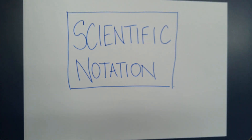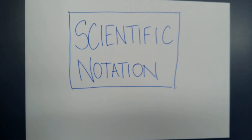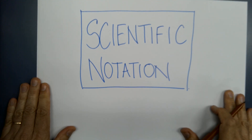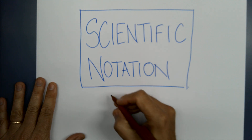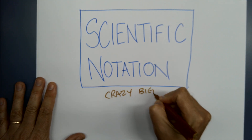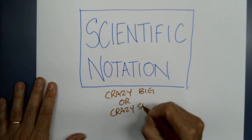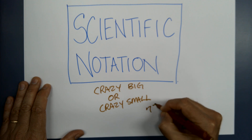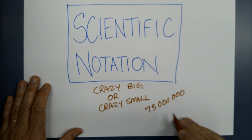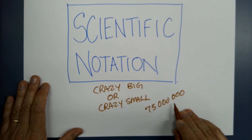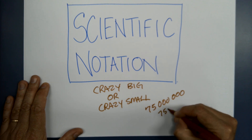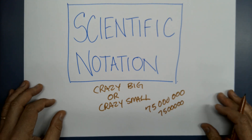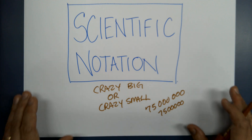Let's talk about scientific notation, which is an important thing in the realm of sparkies, metal fab, engineering, that sort of thing. Scientific notation is a way of dealing with numbers that are either crazy big or crazy small — it's a concise, compact way of writing them. For example, if I've got the number 75 million and I copy it out with the wrong number of zeros, that's a significant difference. Scientific notation makes sure that isn't an issue at all.